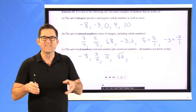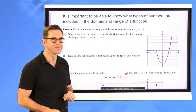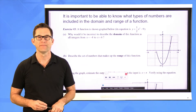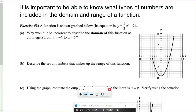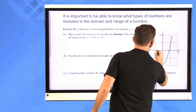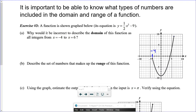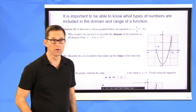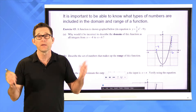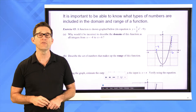Let's dig into domain and range more. Exercise three: a function is graphed below; its equation is y equals one-half times x squared minus nine. Letter A asks: why would it be incorrect to describe the domain as all integers from x equals negative four to x equals six? The function definitely starts at x equals negative four and ends at six, so the domain does go from negative four to six — but why is calling it 'all integers' incorrect?